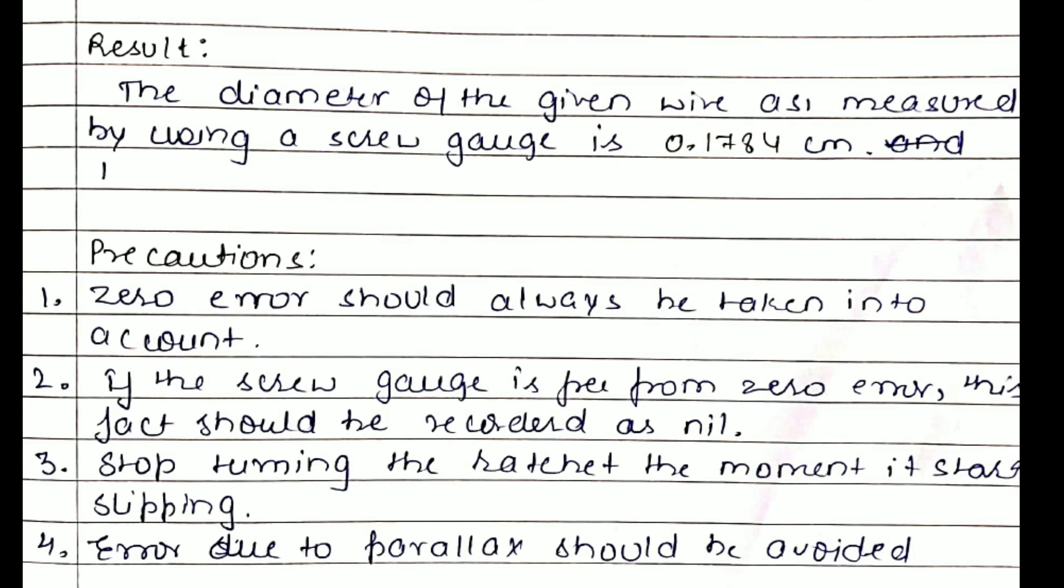Another important thing is the sources of error. Error due to backlash cannot be avoided but it can be minimized. You must minimize the error due to backlash in order to get correct readings. The reading should always be taken at eye level, because if you take it below or above eye level then it might cause parallax. Zero error, which students do not take into account, must be taken. It is a precaution as well as a source of error.